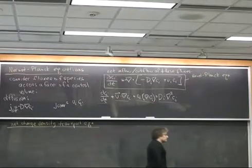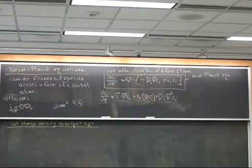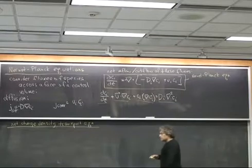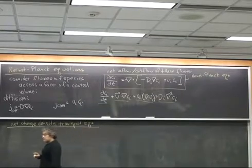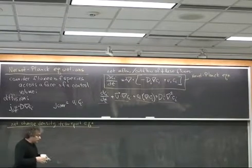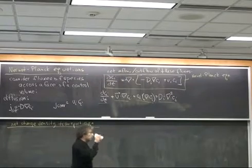If I take this Nernst-Planck equation, which is in terms of Ci, and if I have n species, I have n Nernst-Planck equations that describe the distribution of all the different ions. The net effect of all these ions leads to the net charge density, and that leads to the potential. The potential in turn drives these ions around, so everything is coupled.